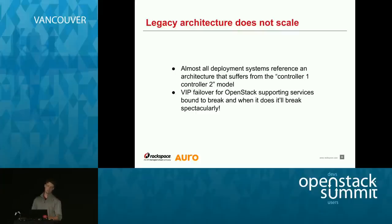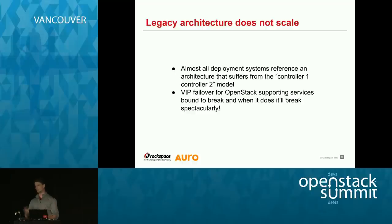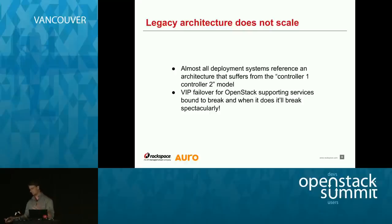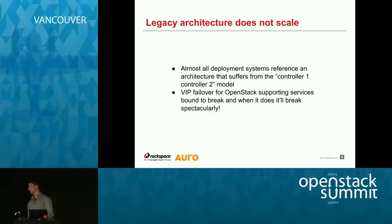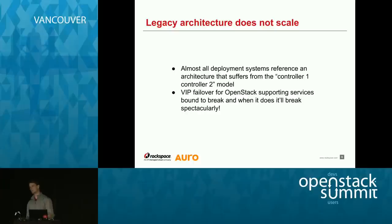The legacy architecture was another problem. A lot of people run a controller-one, controller-two model with a floating VIP in between, all services running on those two controllers, and compute nodes for the rest. This VIP failover would cause problems as your environment scaled out. The reason a VIP falls over is because everything wasn't happy — and we really struggled with this model at larger scale private cloud deployments.